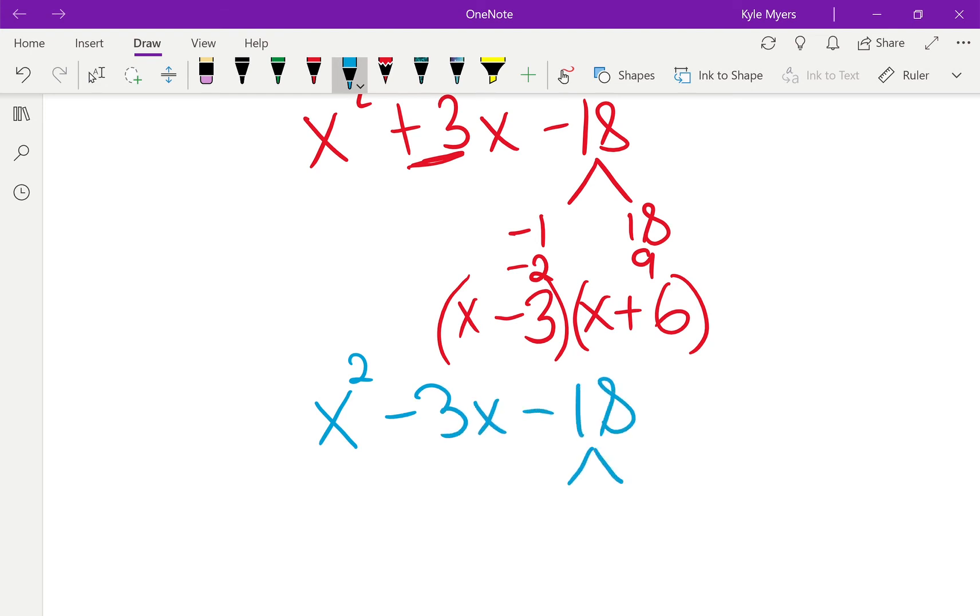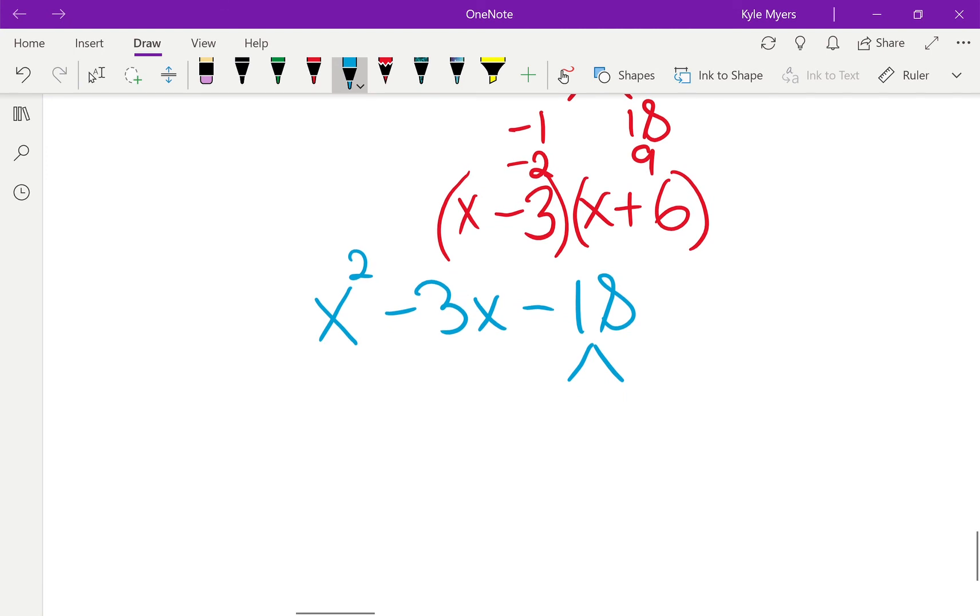x squared minus 3x minus 18. So it works out really the same way because since 18 is negative, I still have to subtract to get 3. So I already know that when I subtract 3 and 6, I get 3. But this time I need the 6 to be negative and the 3 to be positive. So I just throw x's in front. And I put that one a little too close. But that's all you do. You just switch the signs. And now I get negative 3 when I add 3 and negative 6. And there you go. That's your factoring for today.